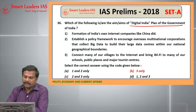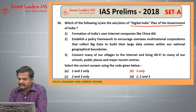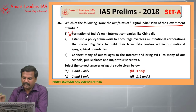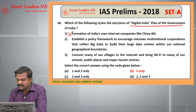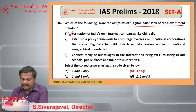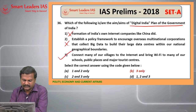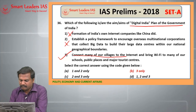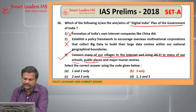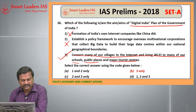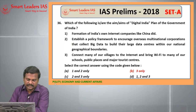36th question: Digital India plan of the Government of India. Formation of India's own internet companies like China did — this is not the aim. Establishing a policy framework to encourage overseas multinational corporations that collect big data to build their own data centres — this is also a wrong statement. Connecting many of our villages to the internet and bringing Wi-Fi to many schools, public places and major tourist centres is the right statement. So the answer is B, 3 only.